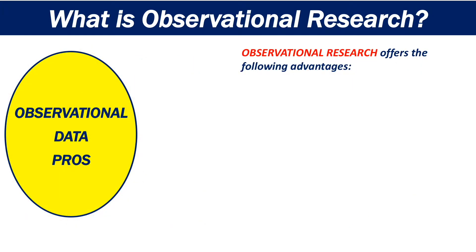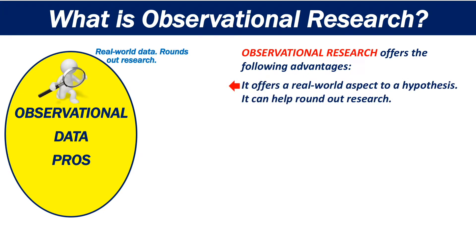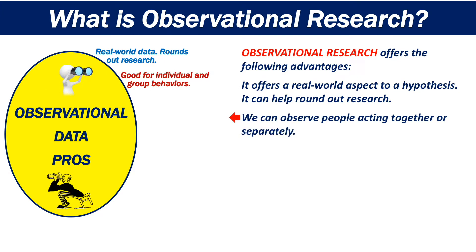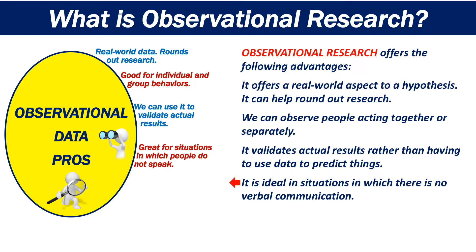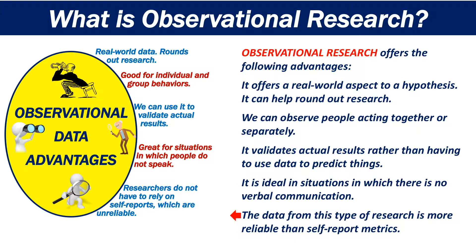Observational research offers the following advantages. It offers a real-world aspect to a hypothesis, and it can help round out research. It allows us to observe people acting together or separately. It validates actual results rather than having to use data to predict things. It is ideal in situations in which there is no verbal communication, and the data from this type of research is more reliable than self-report metrics.